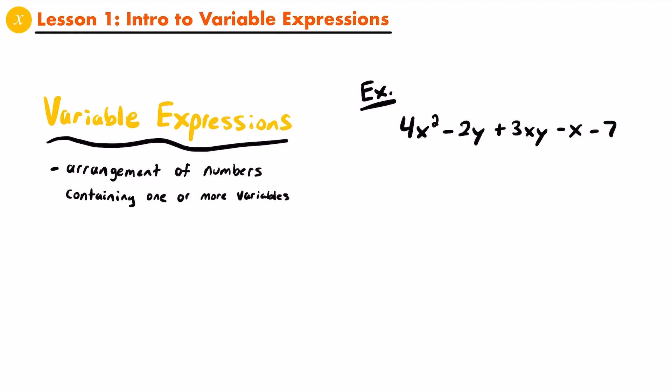Five different terms. Essentially the different terms of an expression, such as a variable expression, will be separated by a plus or minus sign.